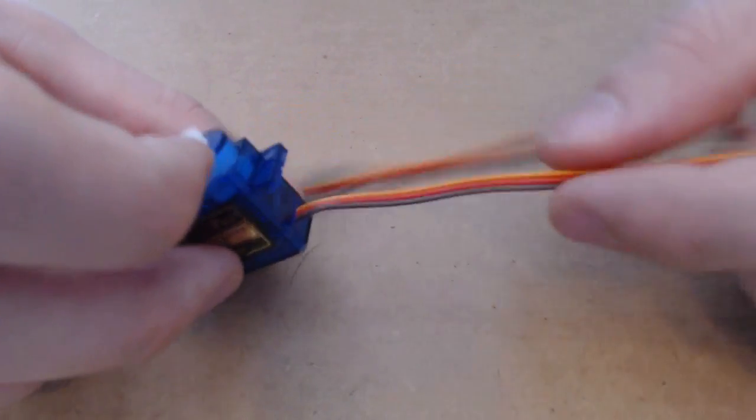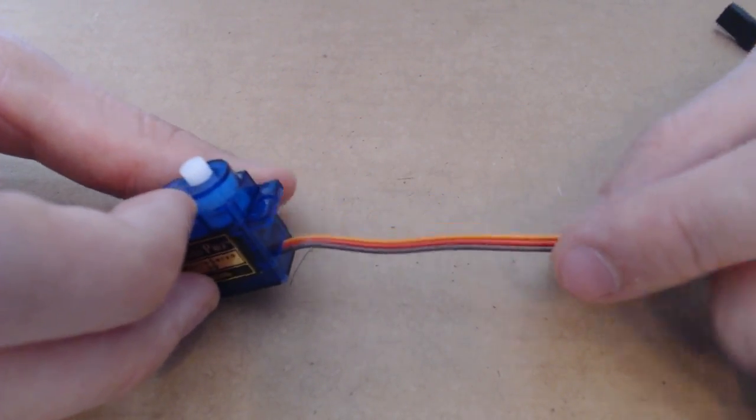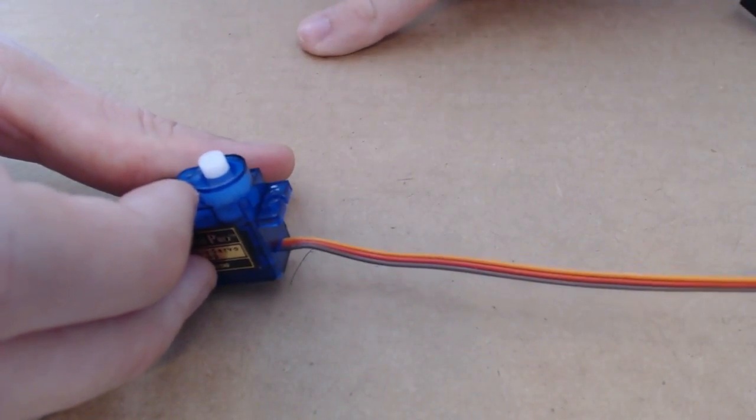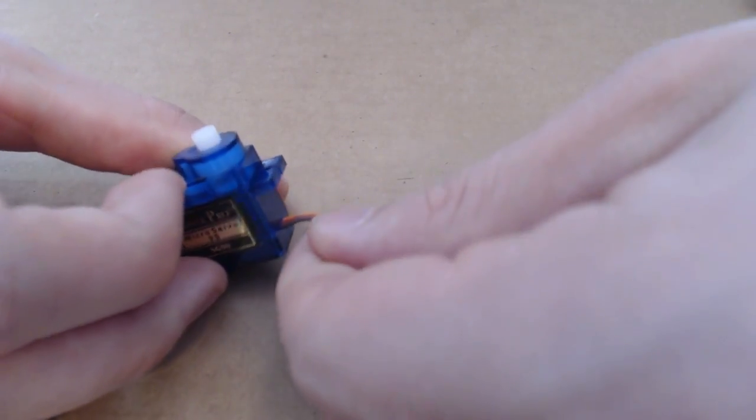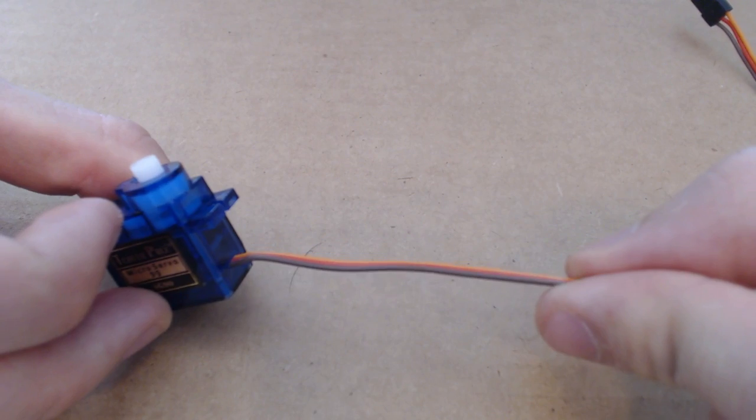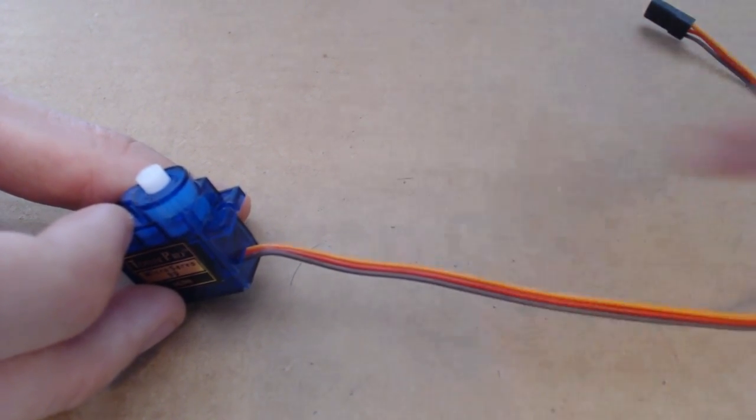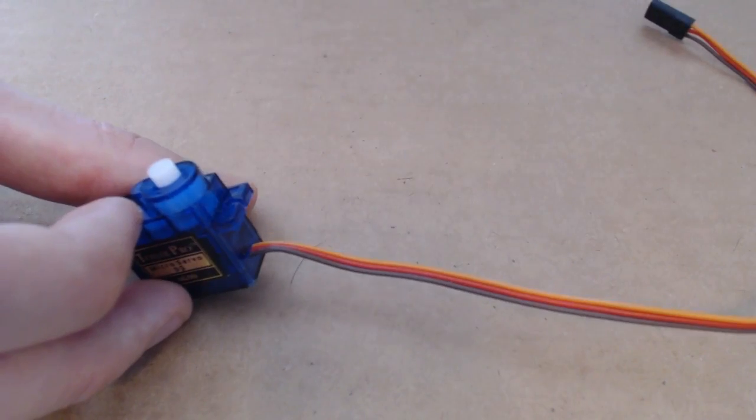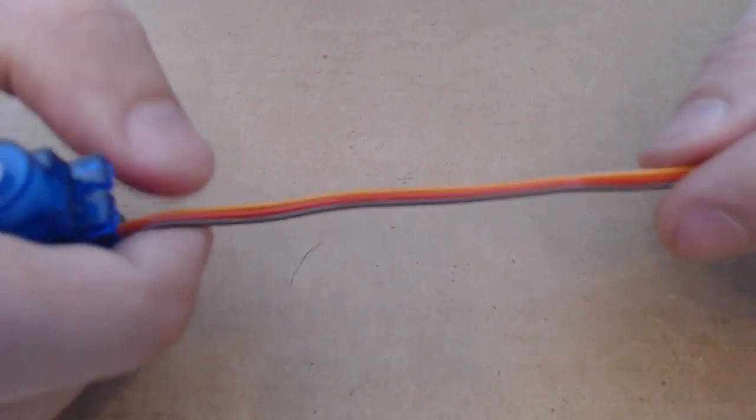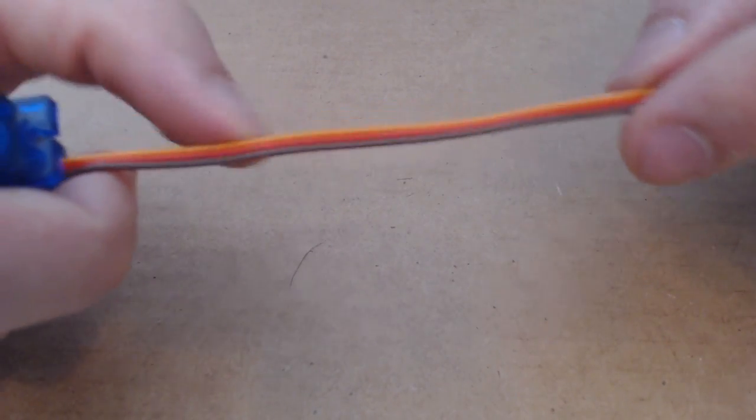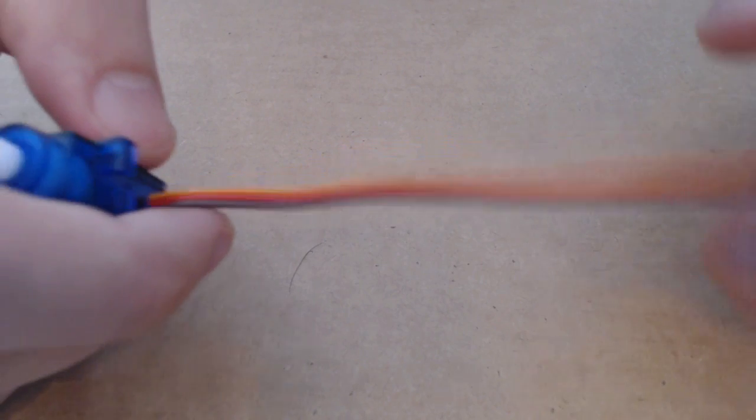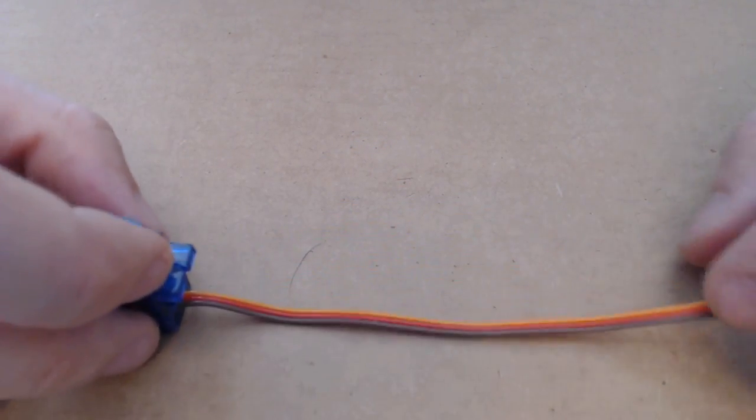So the servo motor has attached to it three wires and each of these three wires does something different. The brown wire is the ground wire for the servo motor. The red wire is the 5 volt wire for the servo motor. And the yellow or orange wire is the signal wire for the servo motor.